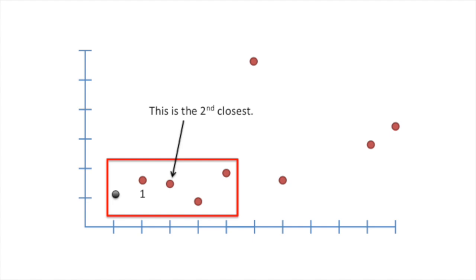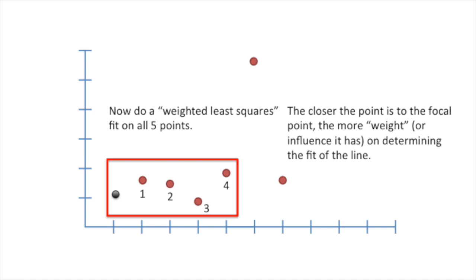This is the second closest point. It's two units away on the x-axis. This point is the third closest and this is the fourth closest. We'll do a weighted least squares fit on all five points. The closer the point is to the focal point, the more weight or influence it has on determining the fit of the line.